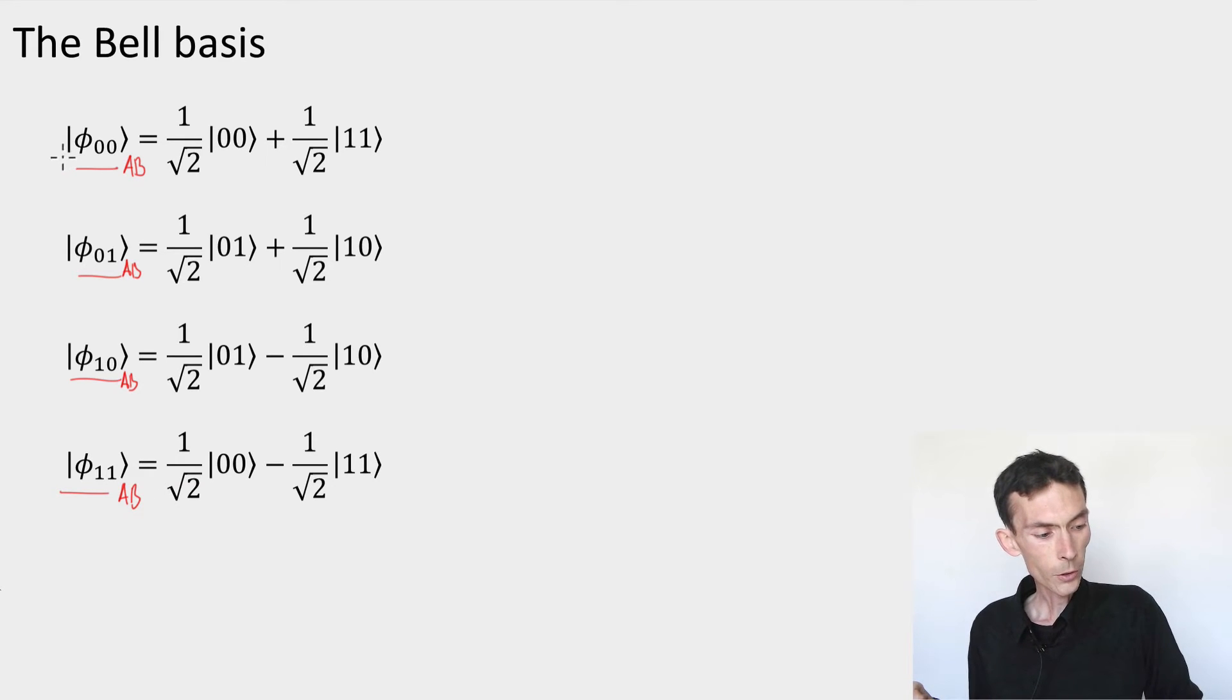So for instance, if I take the first state and the second state, they're orthogonal because they're supported on strings that are distinct. If I take the second and third states, now they both involve the same strings, 0 1, and 1 0. But there's a plus and a minus, and you can check that these two states are going to be orthogonal.